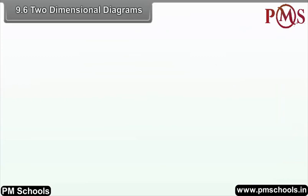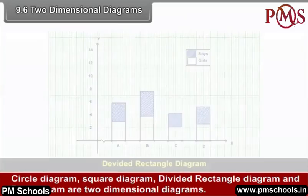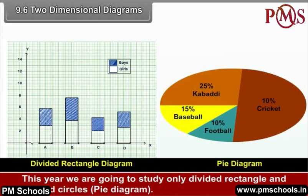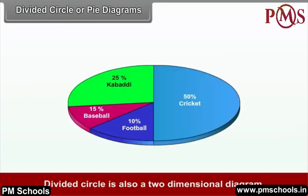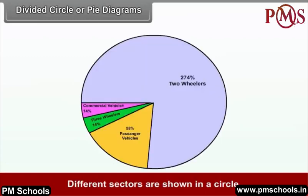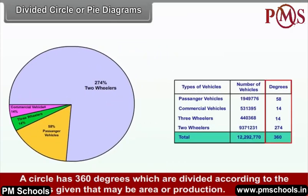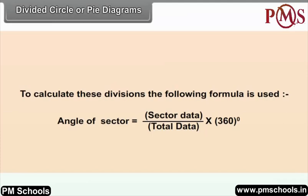9.6 Two-Dimensional Diagrams. Circle diagram, square diagram, divided rectangle diagram and pi diagram are two-dimensional diagrams. This year, we are going to study only divided rectangle and divided circles, i.e., pi diagram. A divided circle (pi diagram) is a two-dimensional diagram where different sectors are shown in a circle. A circle has 360 degrees which are divided according to the sectors given, such as area or production. To calculate these divisions, the formula used is: Angle of sector = (Sector data / Total data) × 360°.